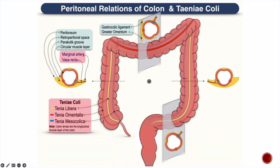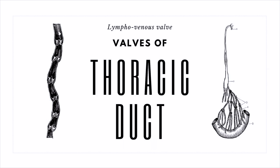This is important for MCQ purposes. If a single diagram or cut section of any portion of the GIT is given, you may be asked which part of the large intestine it represents. That's why it's important for post-graduate entrance exams to understand the relations of the three different tinea.